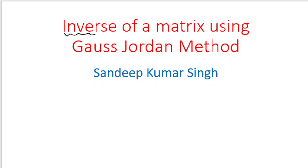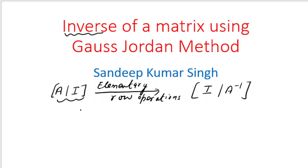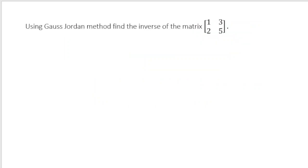Welcome everyone. In this video I am going to talk about the process of finding the inverse of a matrix using the Gauss-Jordan method. To understand the process, we take matrix A, the given matrix, and write the augmented matrix [A|I]. We perform elementary row operations on this augmented matrix, reducing the left side to the identity matrix I, so that the right side becomes A-inverse.